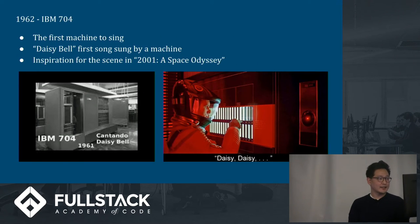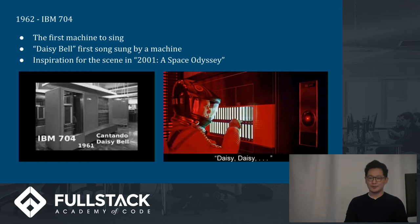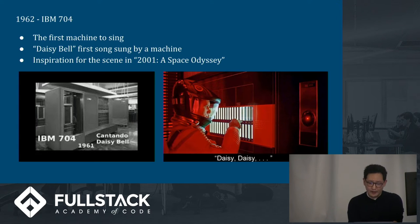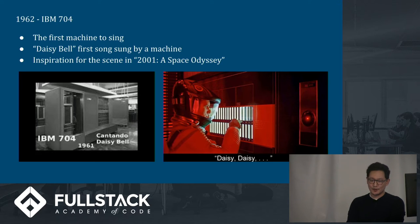Then in 1962 we also get the IBM 704, the first machine able to sing a song — the song being Daisy Bell. Arthur C. Clarke was present for the speech synthesis demonstration at Bell Labs, and this inspired the scene in 2001: A Space Odyssey.